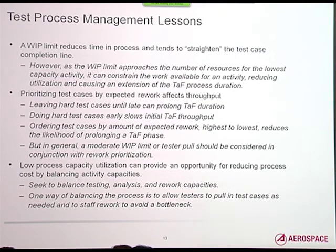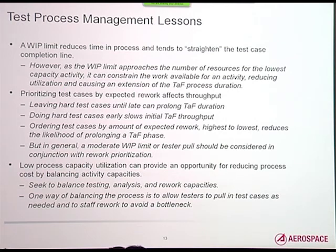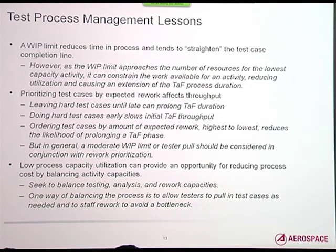Lessons coming out of this: the WIP limit will reduce the time in process, which is what the lean folks are after. However, if it gets too close to the number of resources, it can be a constraining factor — so you have to add some buffer. Also, prioritizing test cases by expected rework, complexity, or risk: you never want to leave the hard ones to last, because what happens is that tail leans way over and drags out the whole process.